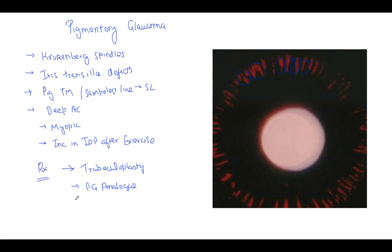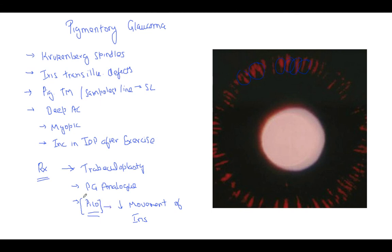Historically, pilocarpine was also used because it reduced the movement of the iris and reduced pigment dispersal. However, nowadays pilocarpine is not much used because of its undesirable side effects and the increased chances of retinal detachment, as these patients are usually highly myopic.